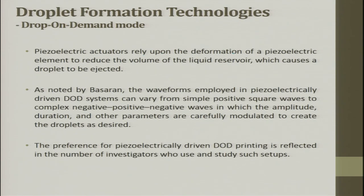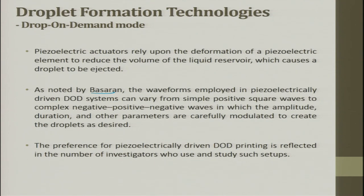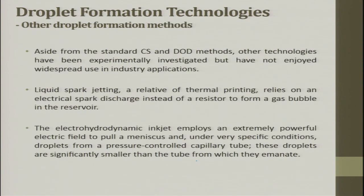Aside from the standard continuous mode and drop on demand method, other technologies have been experimentally investigated but have not enjoyed widespread use. Liquid spark jetting, a relative of thermal printing, relies on an electrical spark discharge instead of a resistor to form a gas bubble in the reservoir. The electro-hydrodynamic inkjet employs an extremely powerful electric field to pull a meniscus and, under very specific conditions, a droplet from a pressure-controlled capillary tube. These droplets are significantly smaller than the tubes from which they emanate.